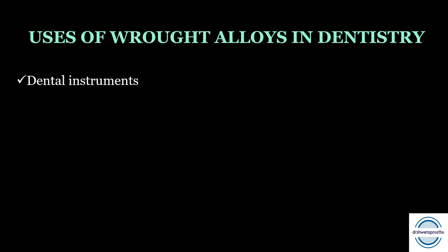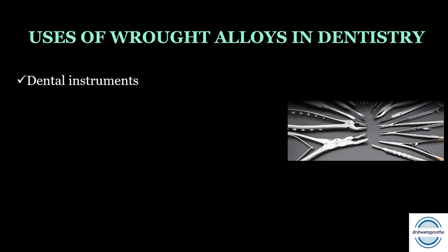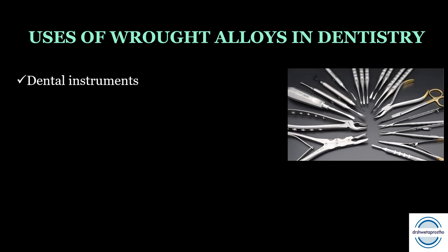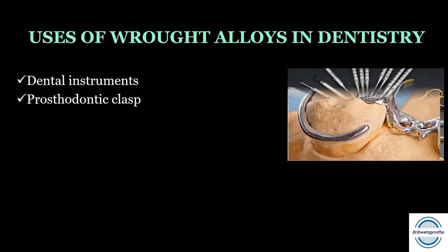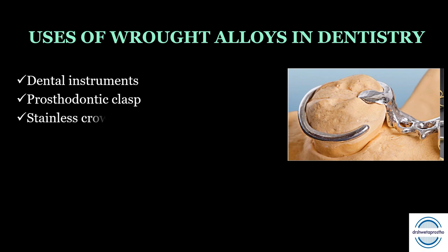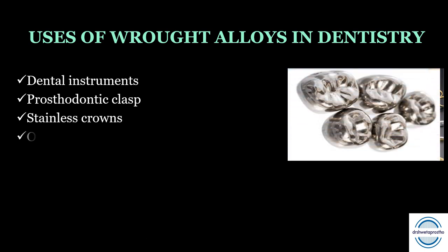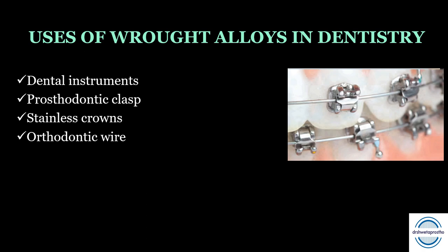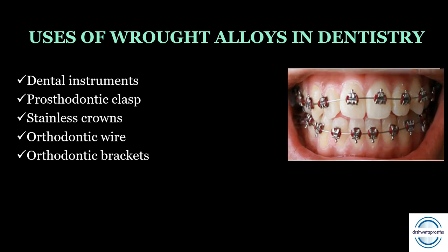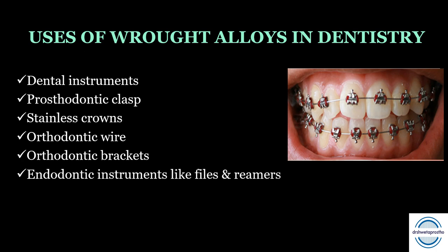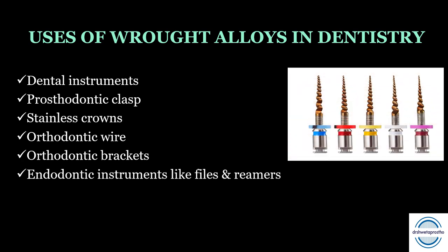First, let us understand the uses of wrought alloys in dentistry. Dental and surgical instruments, including knives, are fabricated from wrought alloys. Second, prosthodontic clasps — mainly the combination clasp — use wrought alloys, which is often asked in MCQs. Third, stainless steel crowns, bands for orthodontic and periodontic purposes, orthodontic wires, night-tie, stainless steel wires, orthodontic brackets, and endodontic instruments like files and reamers are all fabricated from wrought alloys.